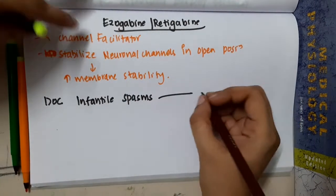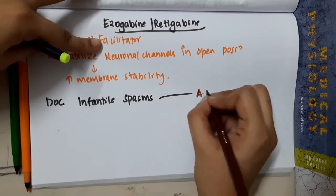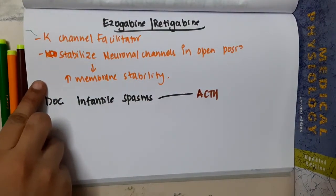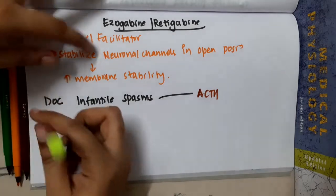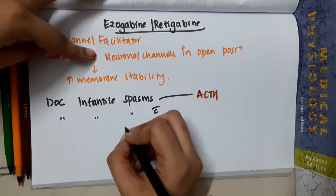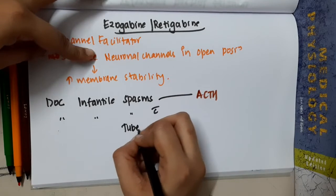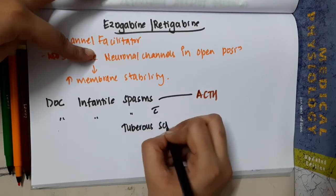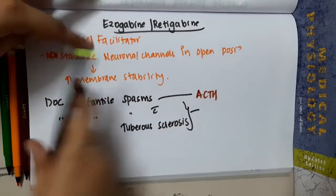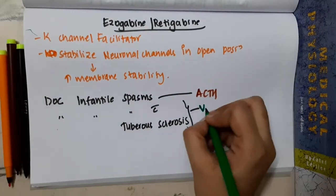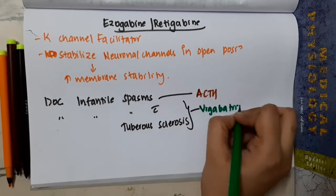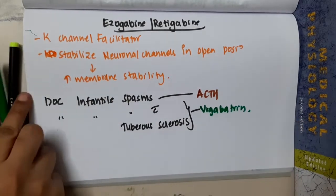The drug of choice for infantile spasms is ACTH. If you were asked what is the drug of choice for infantile spasms with tuberous sclerosis, then that is Vigabatrin.